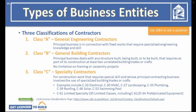Class C, or Specialty Contractors, licenses are for construction work requiring special skill using specialized building trades or crafts. Examples include C10 Electrical, C20 HVAC, C27 Landscaping, C36 Plumbing, C39 Roofing, C46 Solar, and C53 Swimming Pool Contractors. There are also 30 limited specialty classes under the C61 classification, including C61 D34 Prefabricated Equipment. More than 209,000 contractors hold a C license in California.